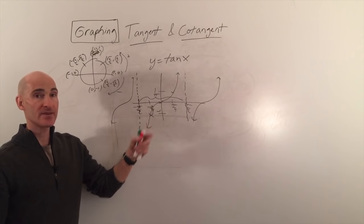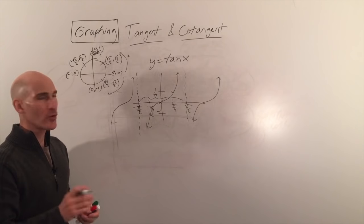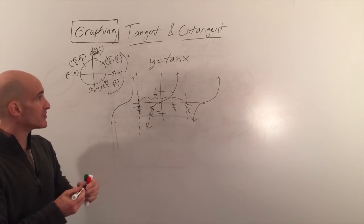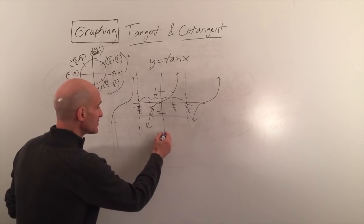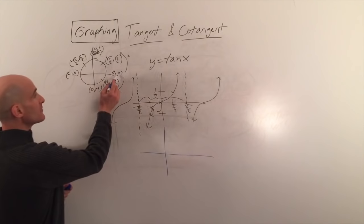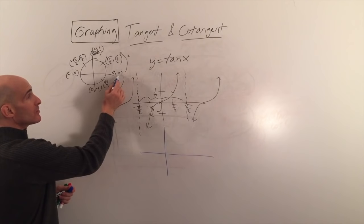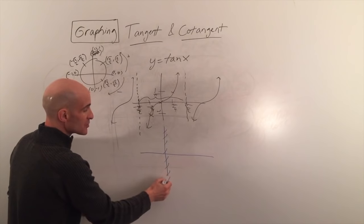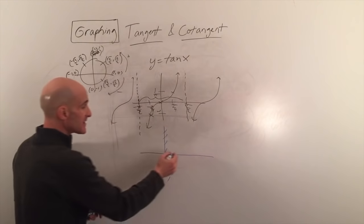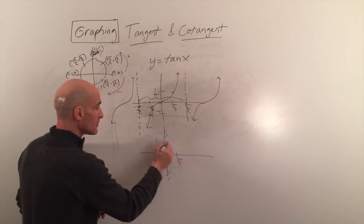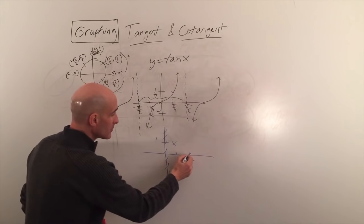Next we'll look at stretching, compressing, and shifting, but first let's examine cotangent. For cotangent, we look at points from 0 to pi. Cotangent is x over y, so at 0 we get 1 over 0 — undefined — giving a vertical asymptote. At pi over 4, x over y equals 1.